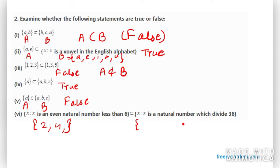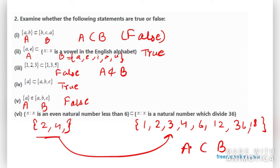Now the next one we have {x: x is a natural number which divide 36}. It must be a natural number and it must divide 36. So it could be one, it could be two, it could be three, it could be four, it could be six, it could be twelve, it could be thirty-six, it could be eighteen as well. So you can see two and four do belong to the second set. So therefore A is a subset of B. Therefore this statement is again true.